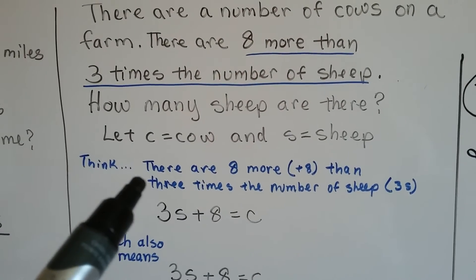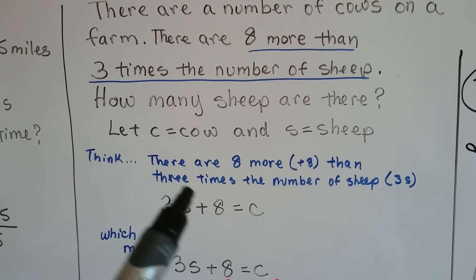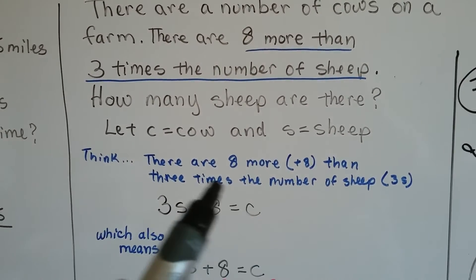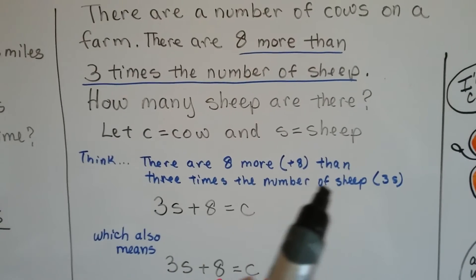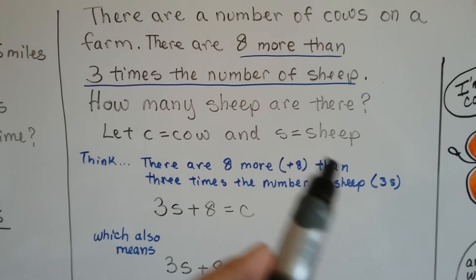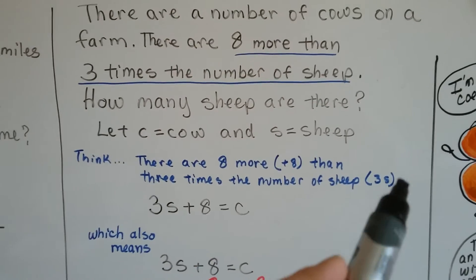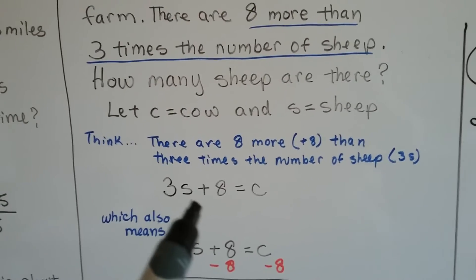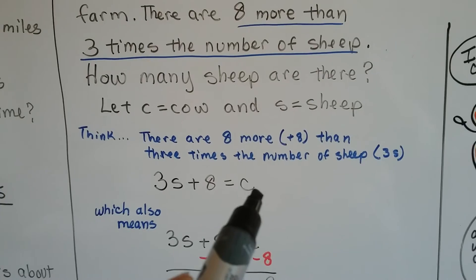So we think there's eight more, that means plus eight, then three times, that means three times something, the number of sheep. So since S is sheep it's 3S, three times the sheep. That means that three times the sheep plus eight is going to equal the cows.